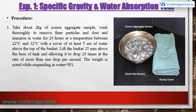Procedure: First, take about two kilograms of coarse aggregate sample, wash thoroughly to remove finer particles and dust, and immerse in water for 24 hours at a temperature between 22°C and 32°C, with a cover of at least five centimeters of water above the top of the basket. Lift the basket 25 millimeters above the base of the tank and allow it to drop 25 times at a rate of more than one drop per second.